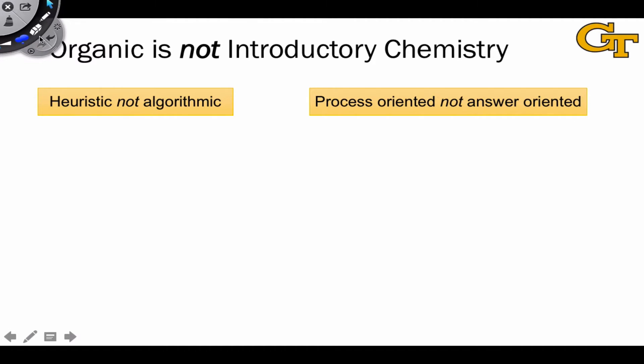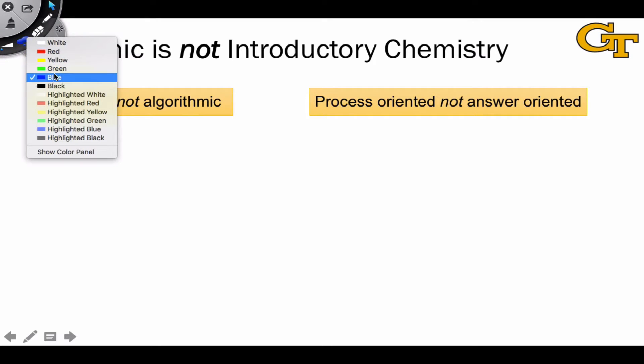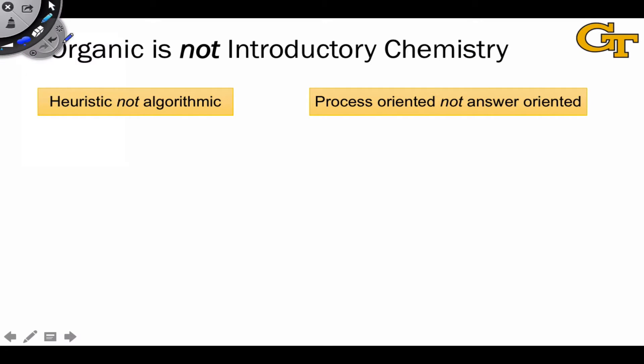The second way organic chemistry differs from general chemistry is that it's process-oriented, not answer-oriented. And we kind of got at this in the last example, but the idea here is that whereas the idea in general chemistry is often to get to quote-unquote the answer, right, there's some number we're trying to get to. And often that number has value, right?